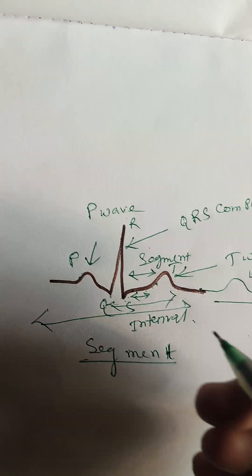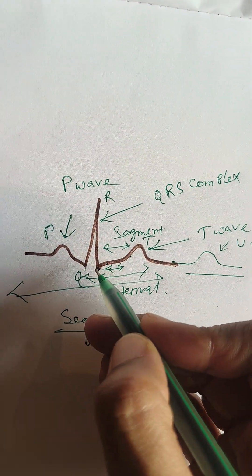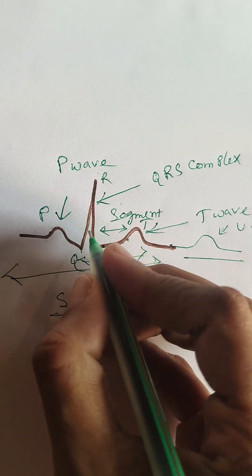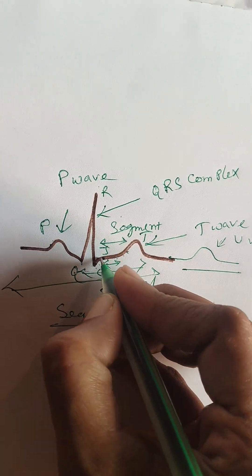In a normal ECG, we check the QRS ending. The end of the area is J point. So J point.